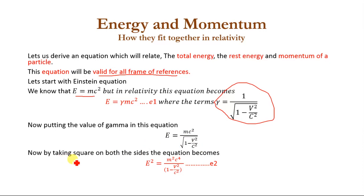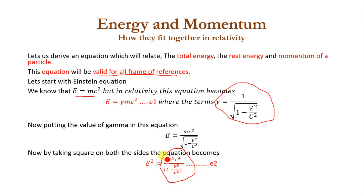Now by taking the square on both sides of the equation, it becomes E² = m²c⁴ / (1 - v²/c²).